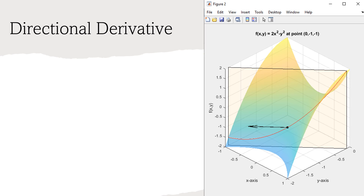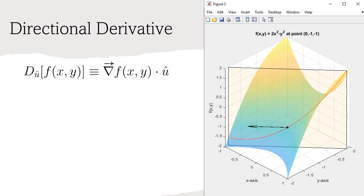Before we start exploring the second derivative test, we should first discuss a few key building blocks, one of which being the directional derivative. The directional derivative of a function f in the direction of the vector u at some point x, y, z is defined as the gradient of f evaluated at the point, then dotted with the unit vector u. The gradient of f can be written as the vector containing the partial derivative of f with respect to x and the partial derivative of f with respect to y.